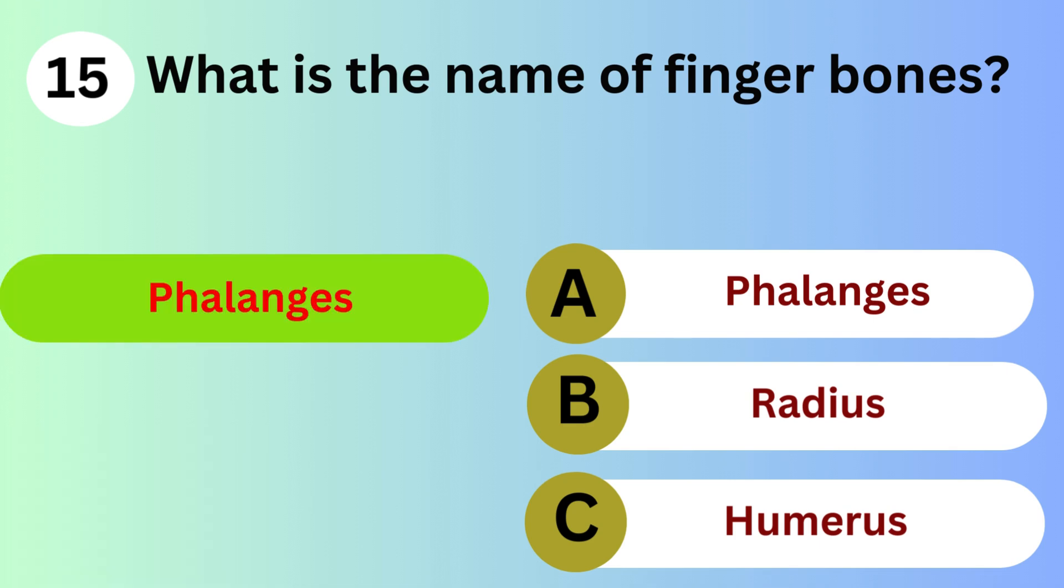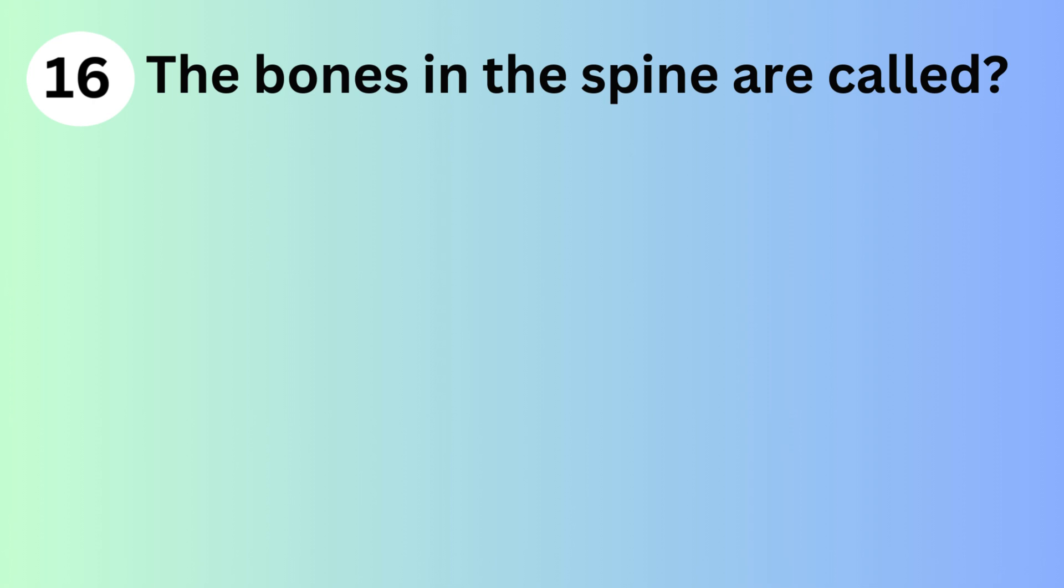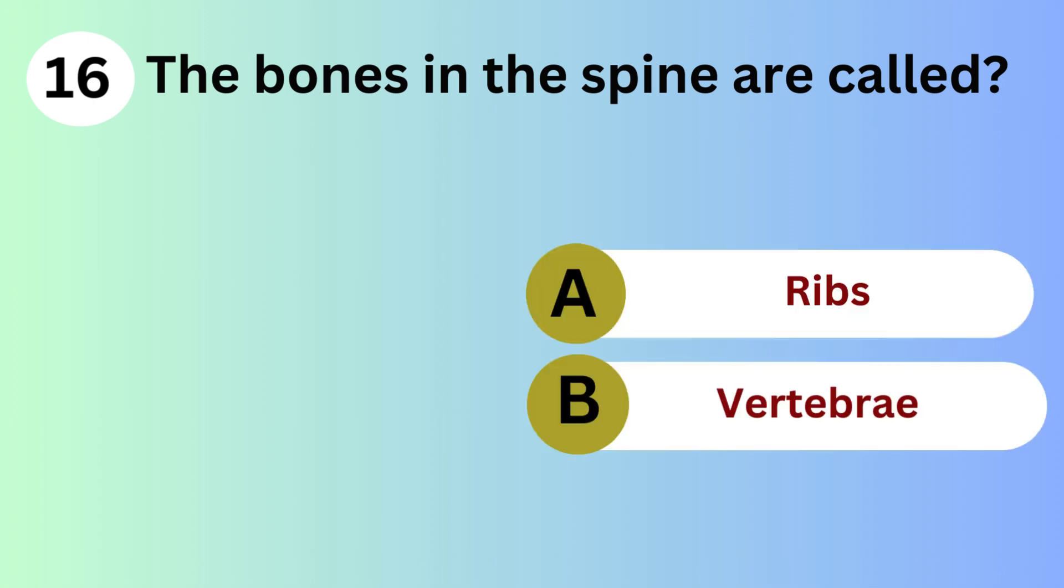Answer is A. Phalanges. The bones in the spine are called? A. Ribs. B. Vertebrae. C. Sternum.